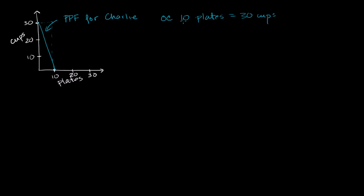So the opportunity cost of producing 10 plates is 30 cups. If you want the opportunity cost for one plate, you divide both sides by 10, and you get the opportunity cost of one plate is equal to three cups.